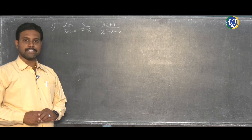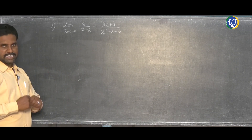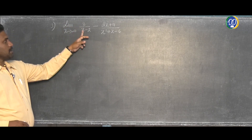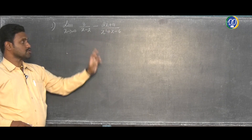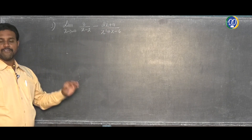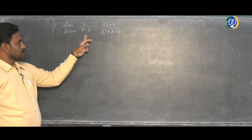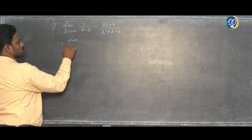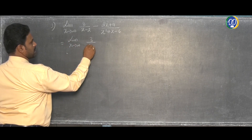Hi students, welcome to DD Academy Chennai. Limits and derivatives, exercise 9.3, question number 3. The limit as x tends to infinity of 3 by (x minus 2) minus (2x plus 11) by (x squared plus x minus 2). The first thing you are told to do is simplify. So let us simplify this. Limit extends to infinity: 3 by (x minus 2).